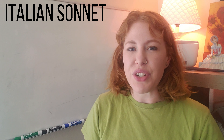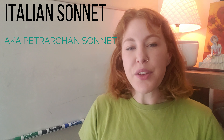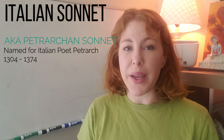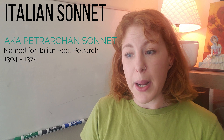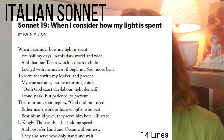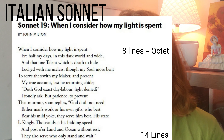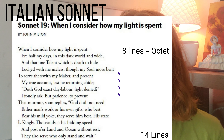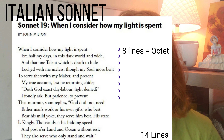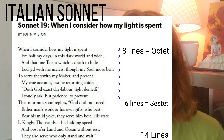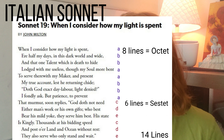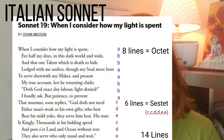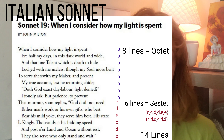An Italian sonnet is also known as a Petrarchan sonnet. The format is named after an Italian poet known as Petrarch, who lived from about 1304 to about 1374. The format has 14 lines. The first eight lines are combined into what is known as an octet — eight lines that contain a rhyme scheme of ABBAABBA. The last six lines is known as a sestet, with rhyme schemes such as CDECDE, CCDDEE, or CDDCDD.